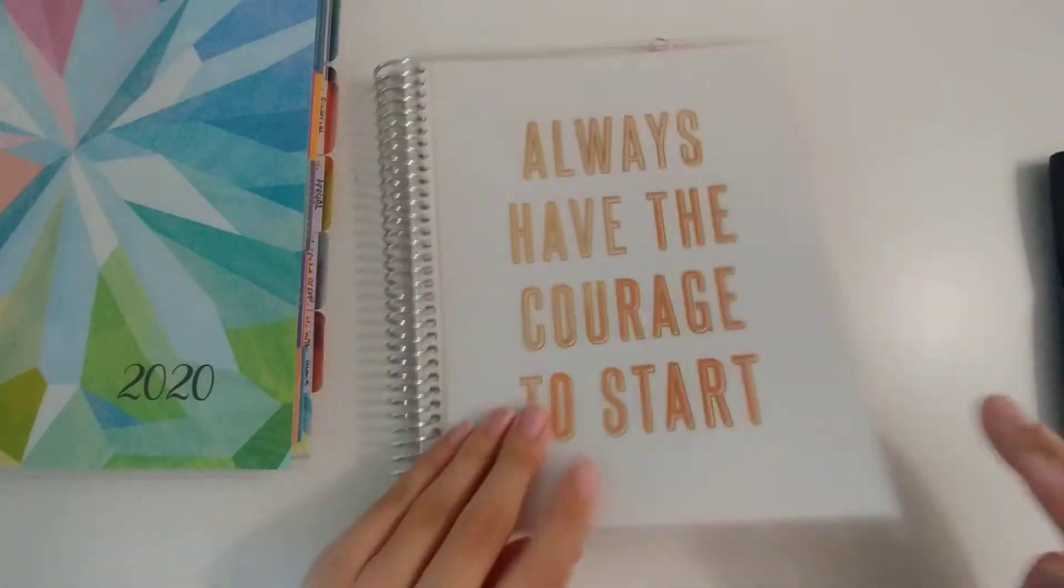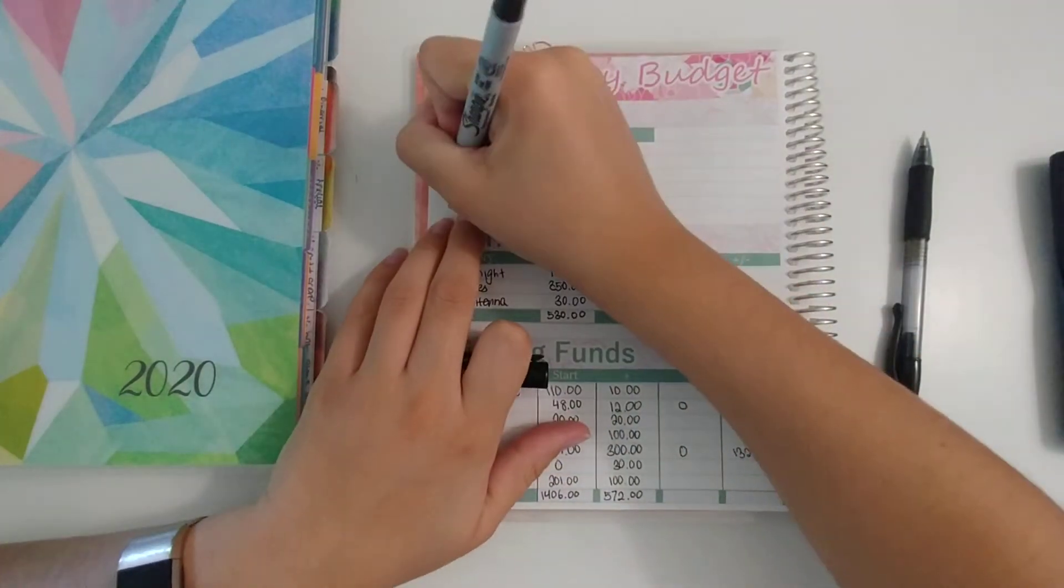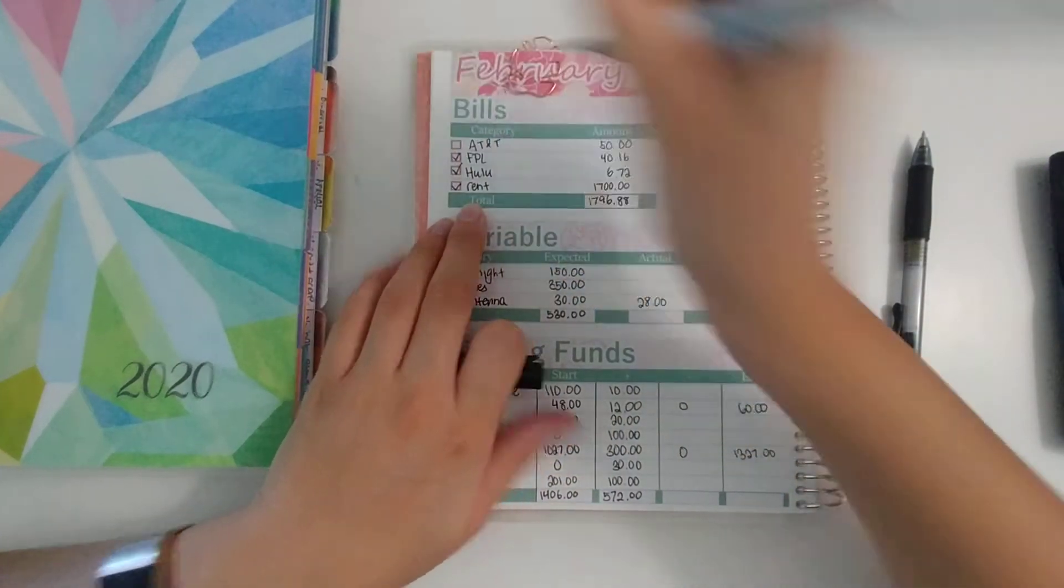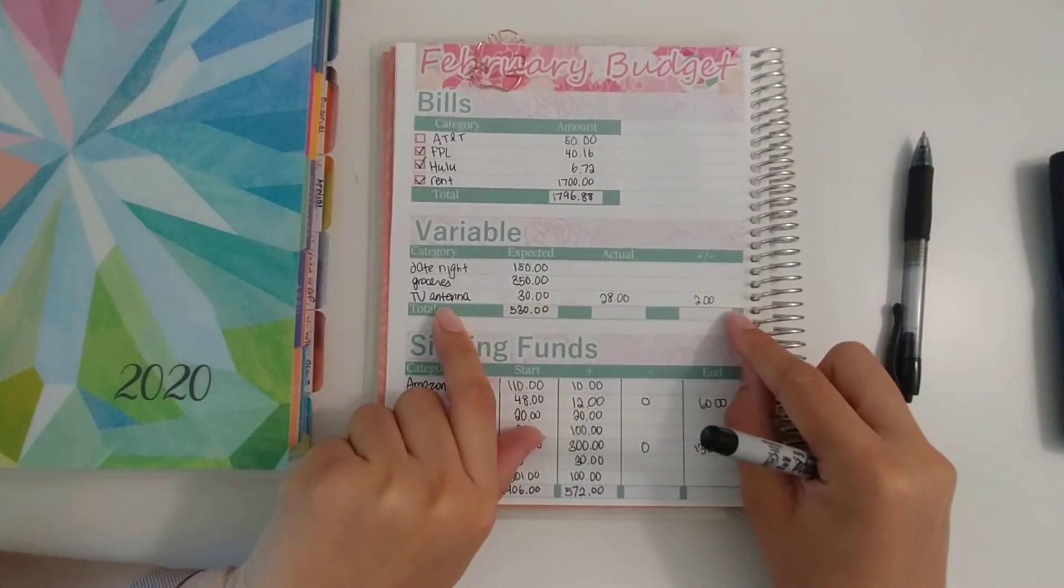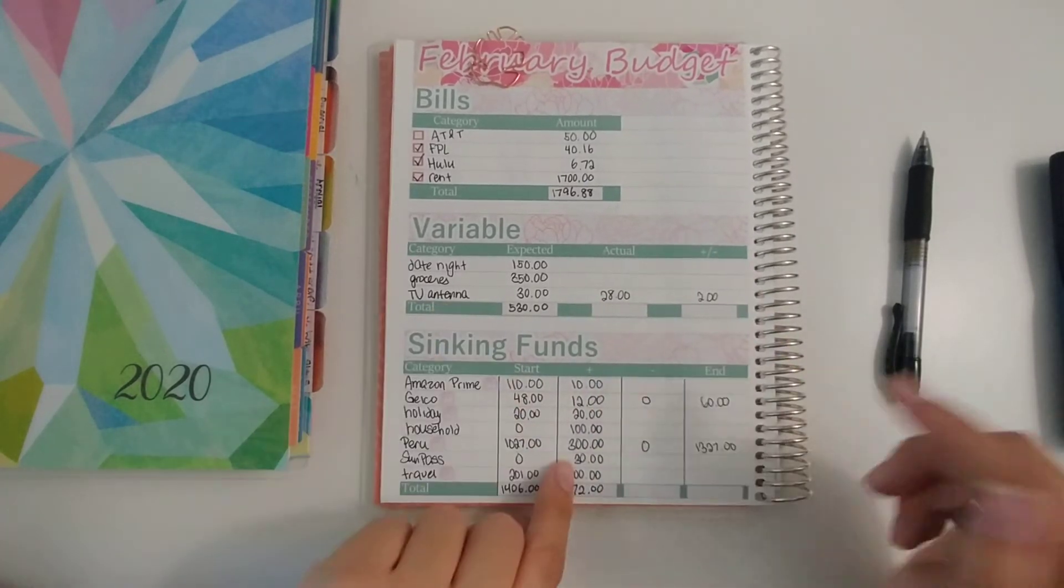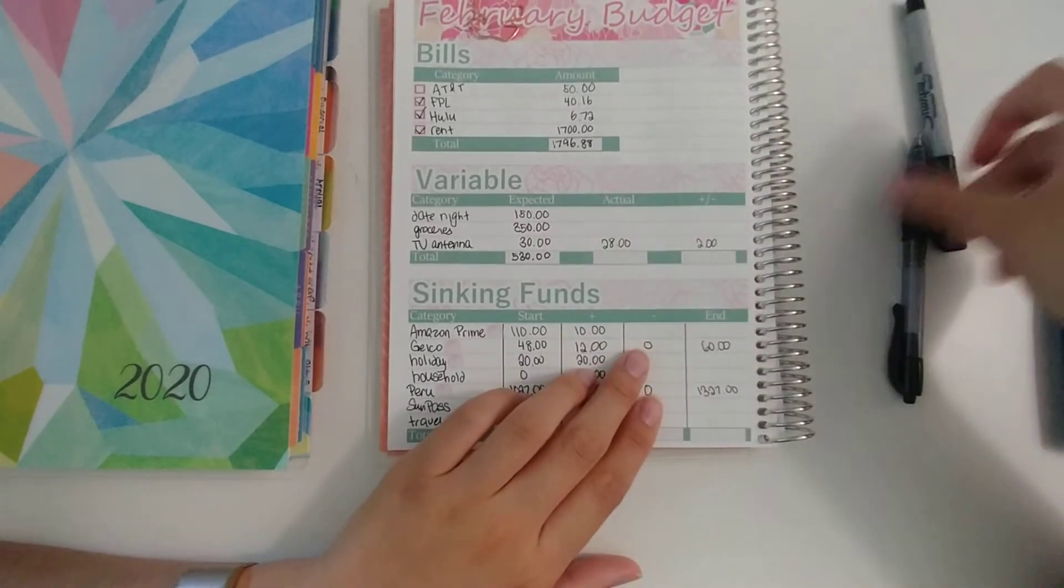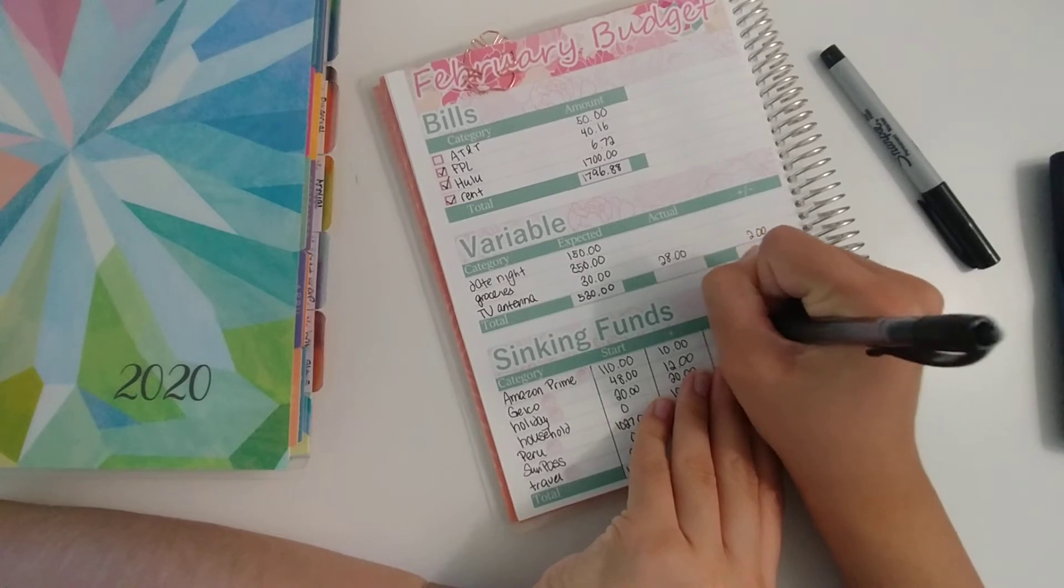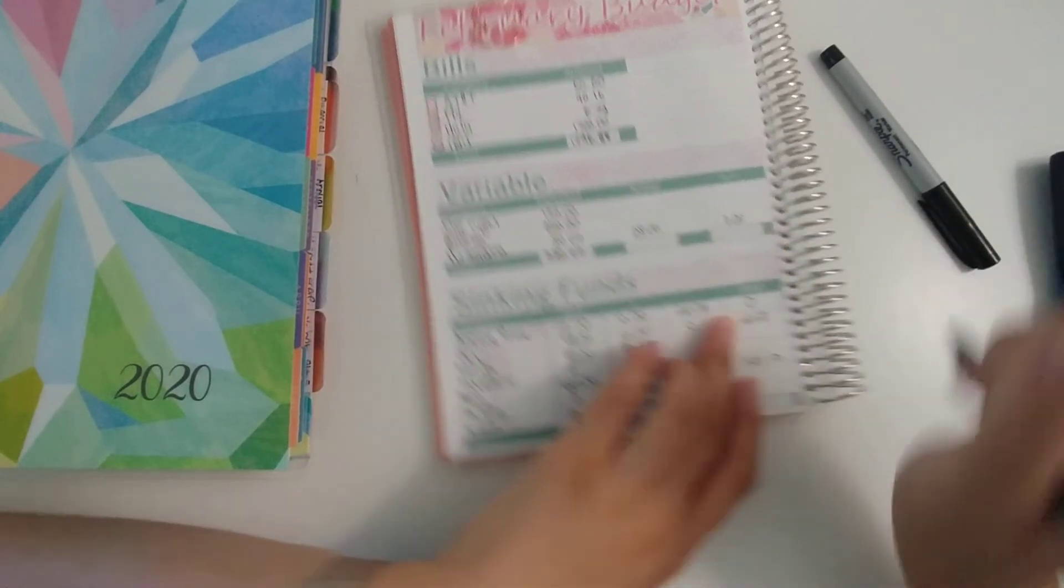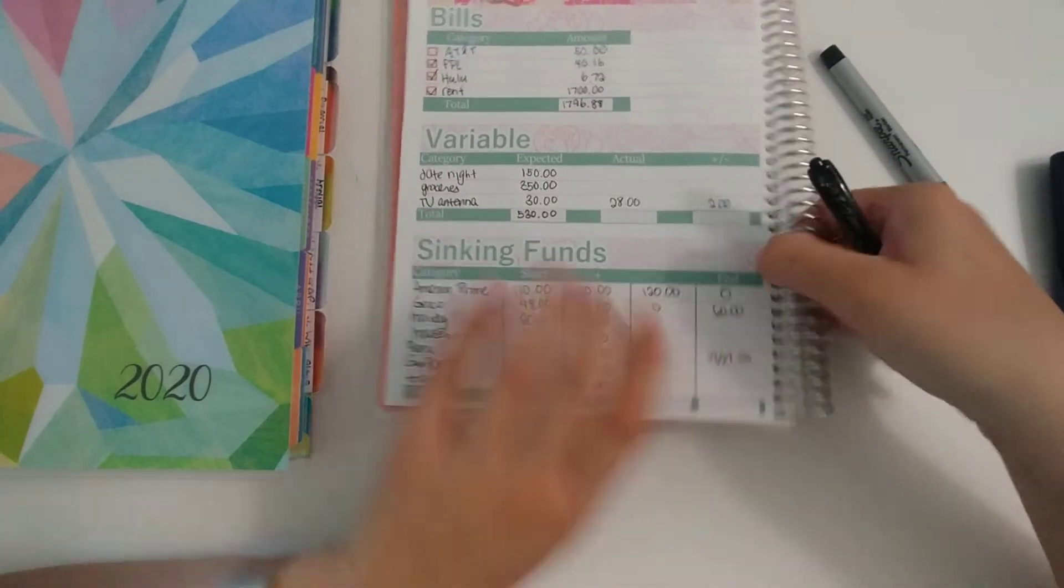And then now moving on to our joint budget planner. So rent has been taken out this week. AT&T will come out in a few days. You can see I filled in the TV antenna. We bought that from Amazon, so we were $2 under for that one. The rest of these categories will be filled in at the end of the month. Amazon Prime was actually taken out, and that was $120. So now we have zero. Everything else we calculated at the end of the month.